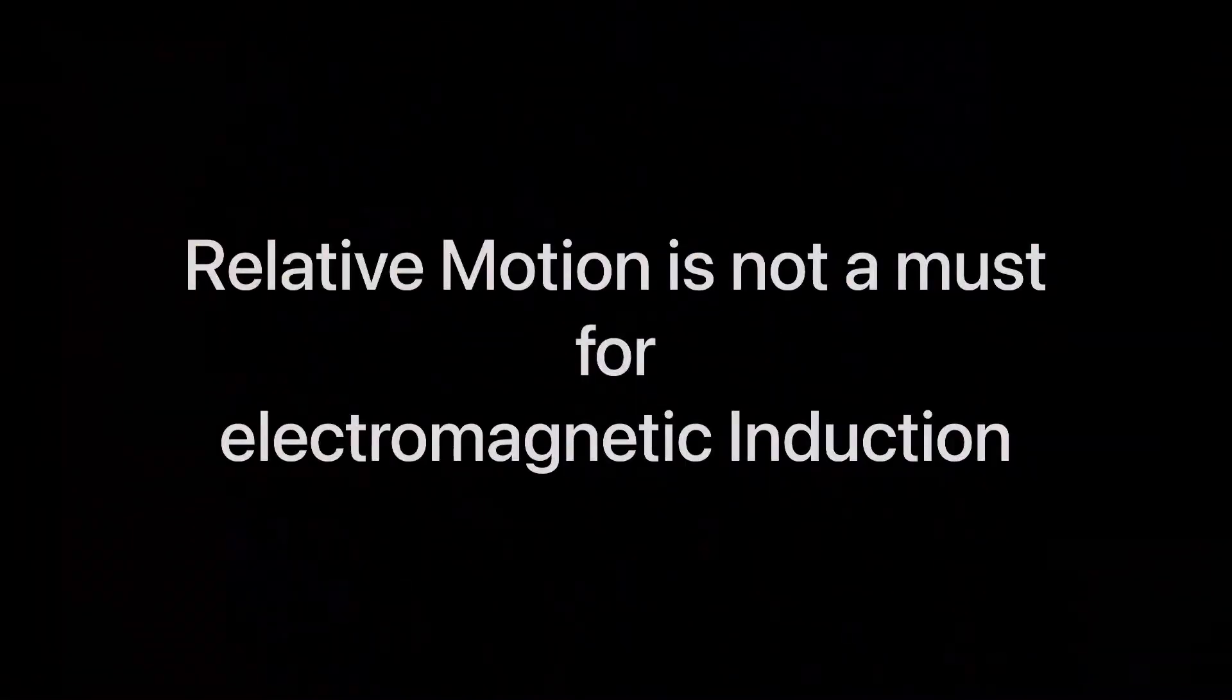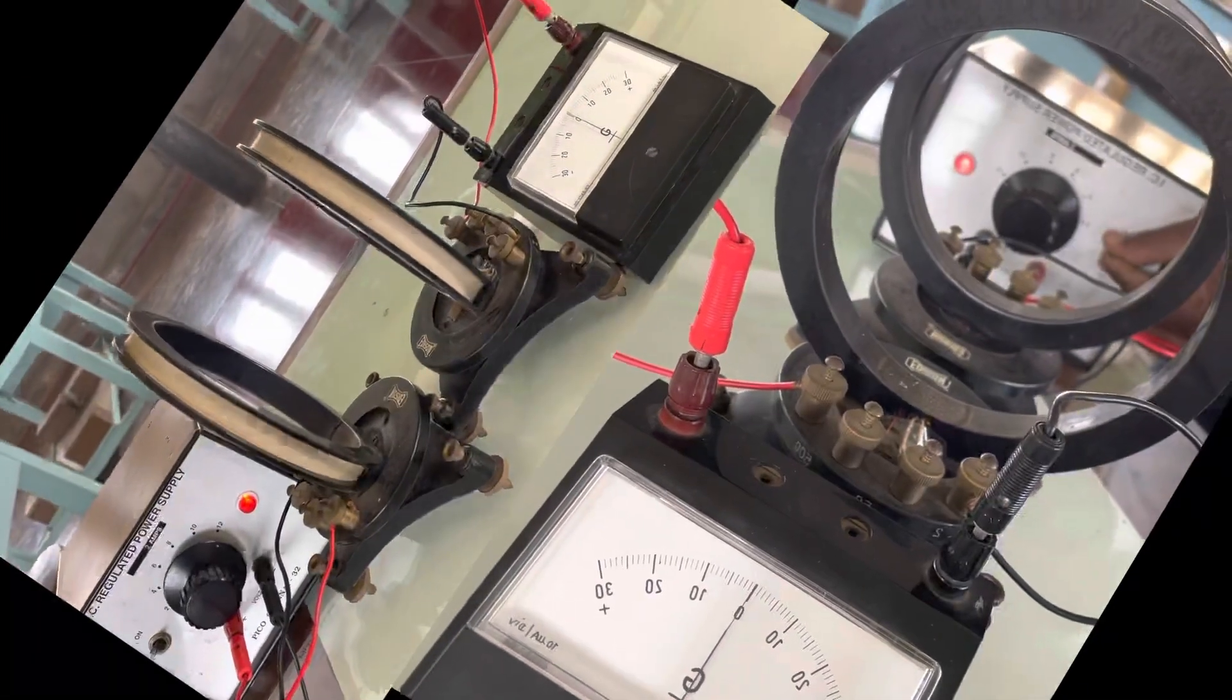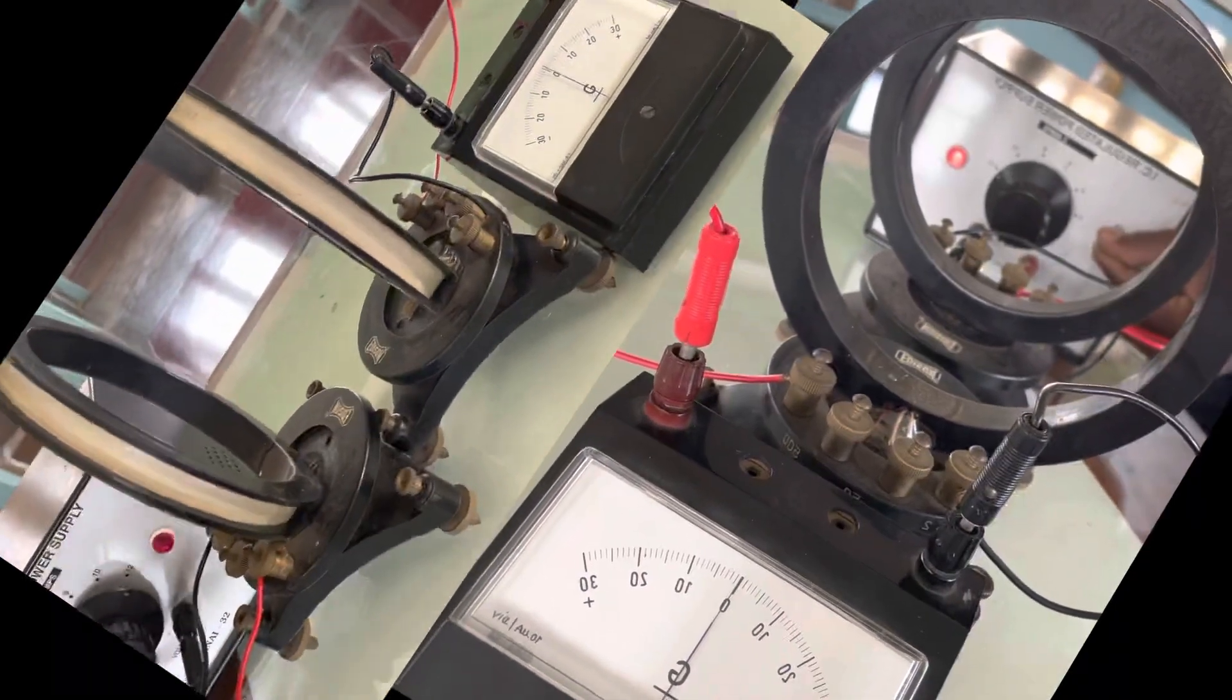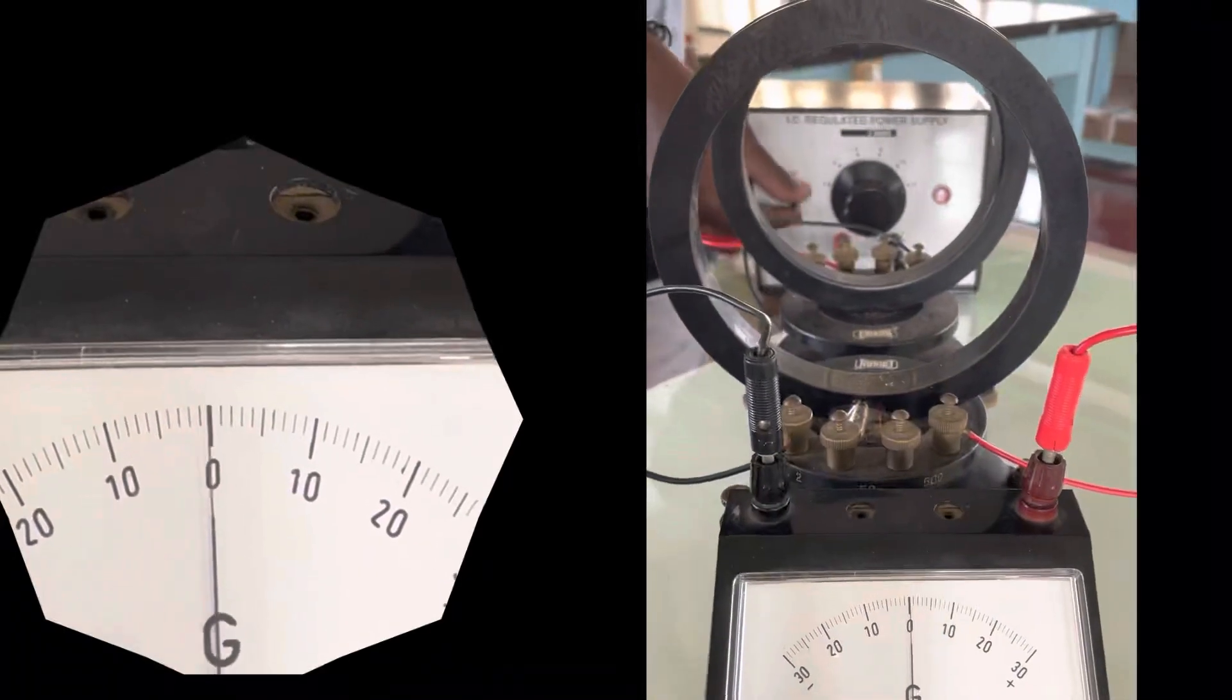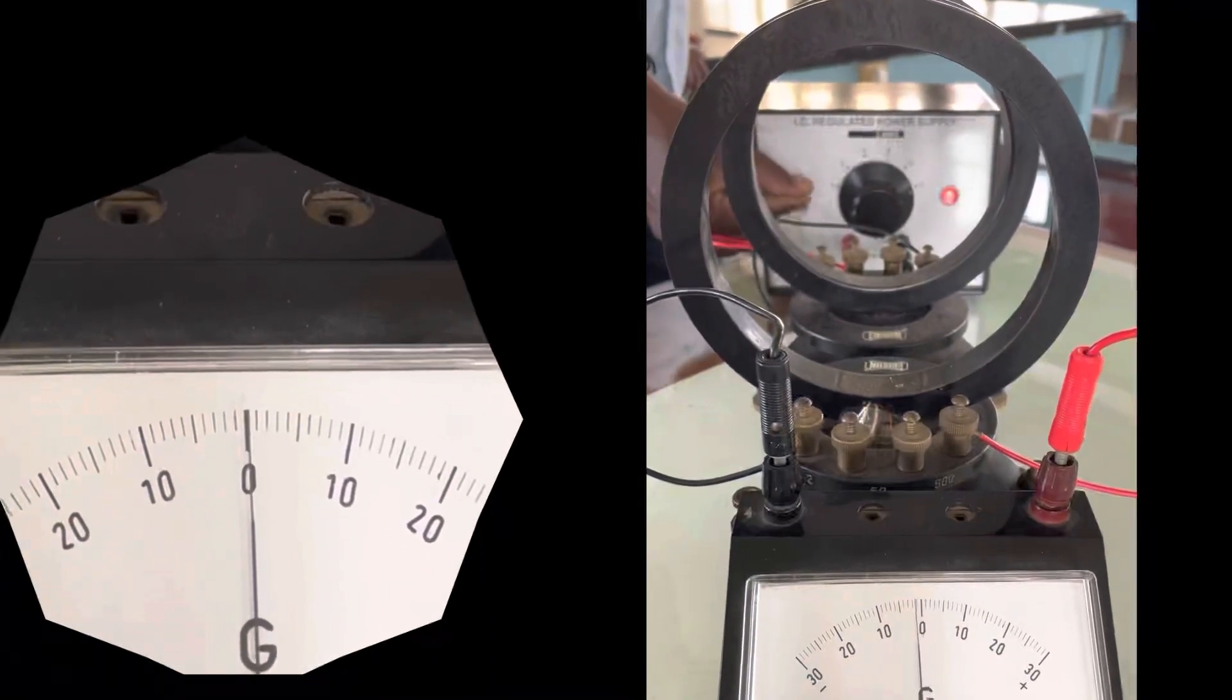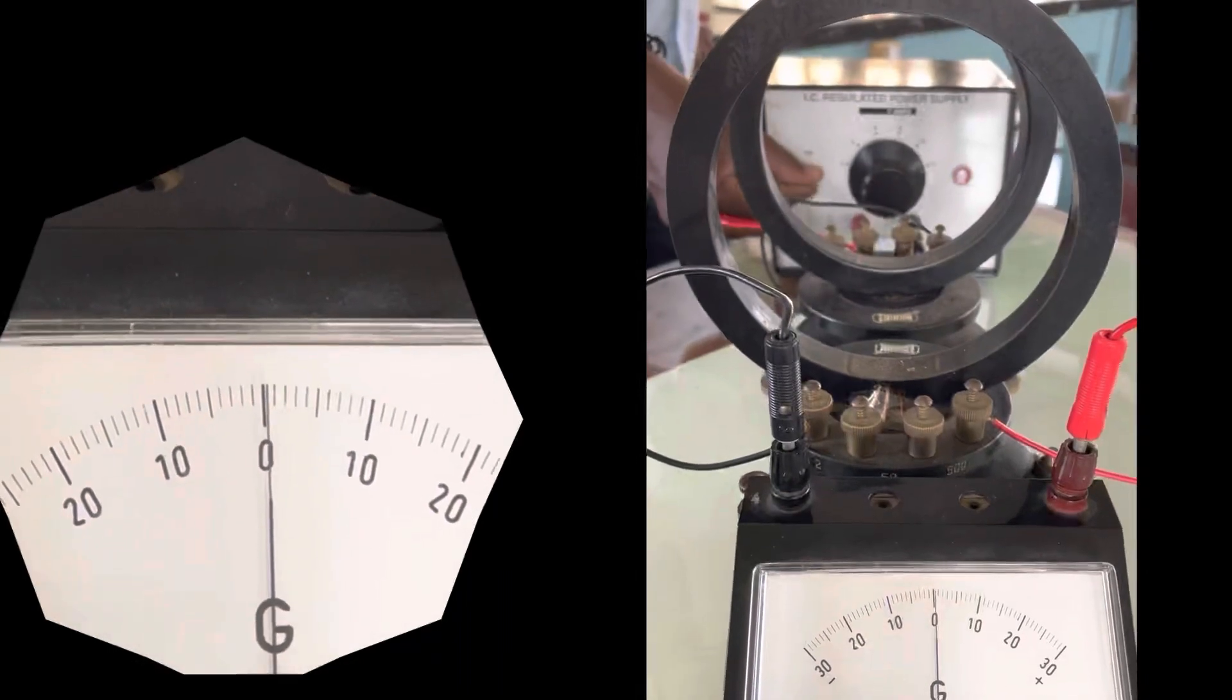Relative motion is not a must for electromagnetic induction. In the setup, we see out of two coils, one of the coils is connected to the power source. The other coil is connected to a galvanometer. When the power source is switched on and switched off, we see an instantaneous momentary deflection in the galvanometer. This demonstrates there need not be any relative motion between the two coils.